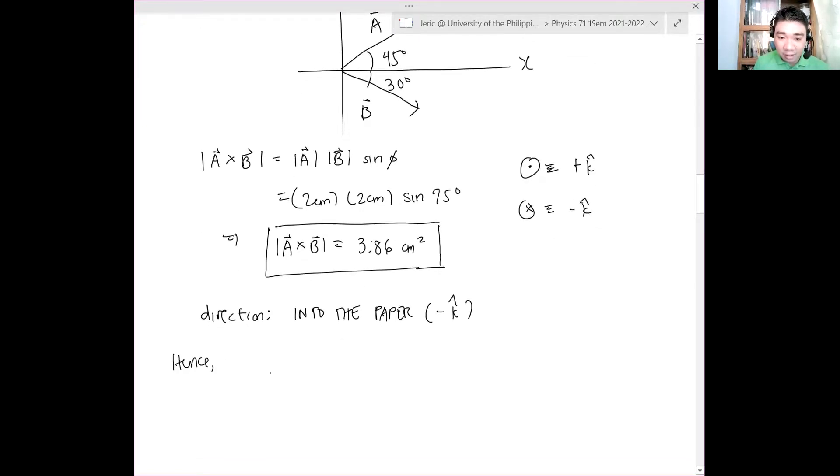Hence, A cross B equals negative 3.86 K hat square centimeters. Or if you prefer, this is also 3.86 square centimeters into the paper. So that's your final answer. Questions?